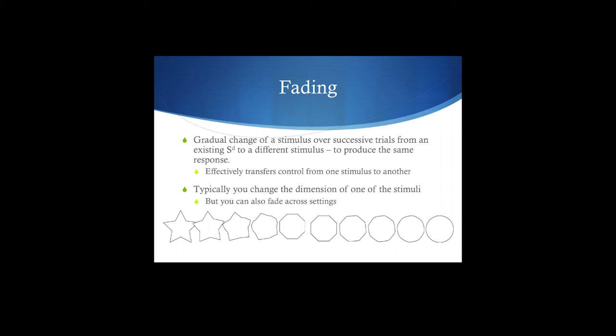But you can also fade across settings. In other words, somebody's engaging in a particular behavior at home, but they're not doing it at school, so you could fade out that home to school. That's a pretty big fade that you would have to do, but you could make something similar. You could have a verbal cue at home or a visual cue at home, and then you could bring that visual cue to school and slowly fade that visual cue out. Maybe just a little piece of paper or a wristband or something. Who knows? So let's look at some examples of fading.